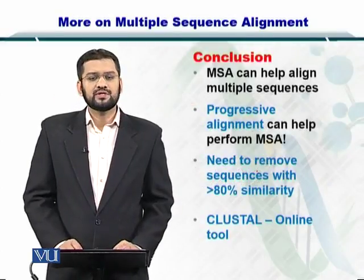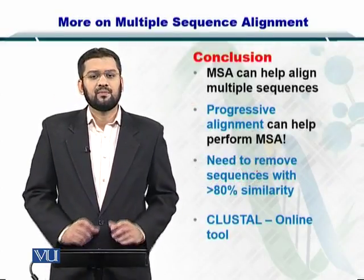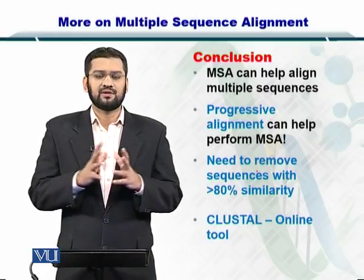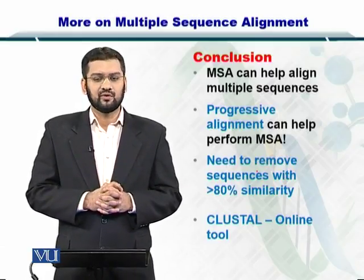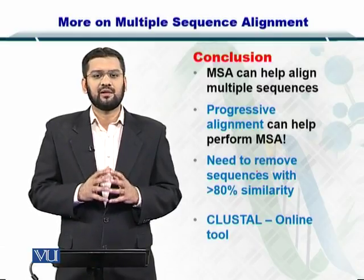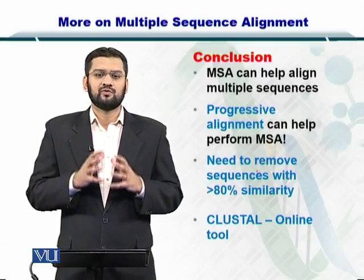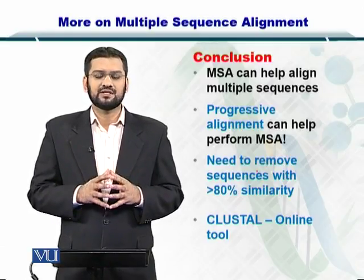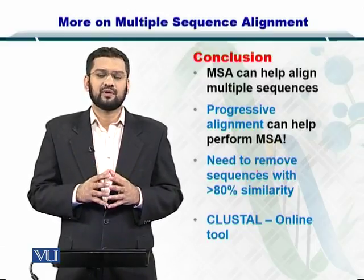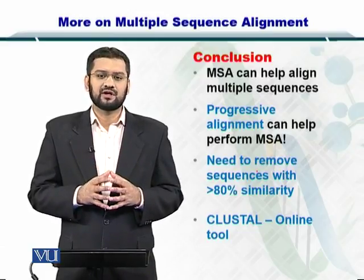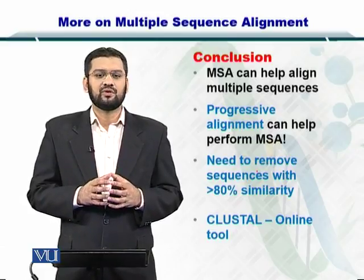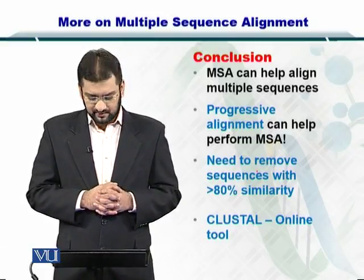In conclusion, multiple sequence alignment can help you compare multiple sequences at once. This process can help you find out evolutionary relationships between sequences, predict secondary structures of proteins, and create phylogenetic trees as well.